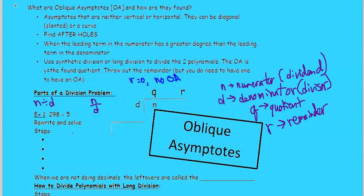So let's look at an example. We have 298 divided by 5. We'll write those here.